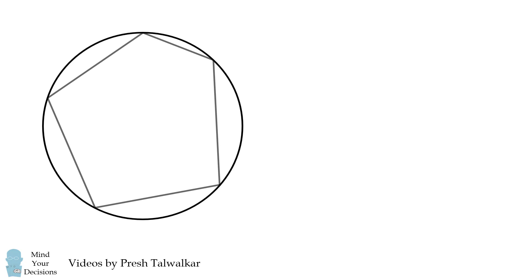Mind your decisions, I'm Presh Talwalkar. In a circle, a pentagon is inscribed. Opposite vertex A is side A. We'll use this convention to label the entire pentagon ABCDE.